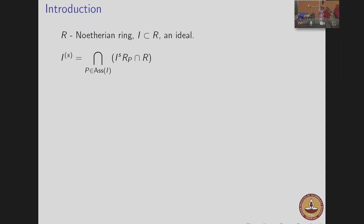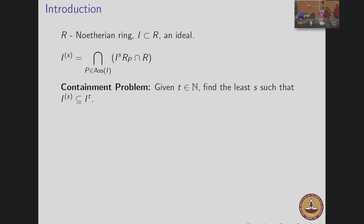Symbolic powers have already been introduced in earlier talks. The m-th symbolic power of I is defined as the intersection over associated primes P of the contraction of I^m localized at P back to R. The problem is: given T, find the least S such that I^{(S)} is contained in I^T.